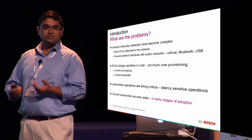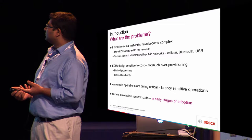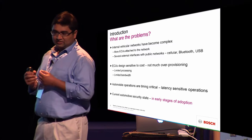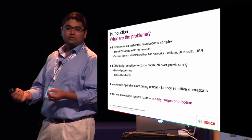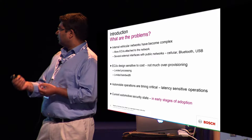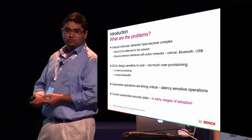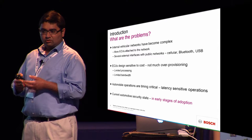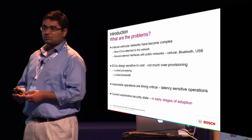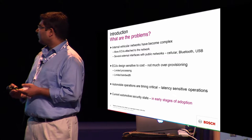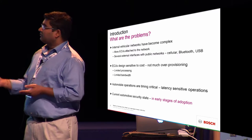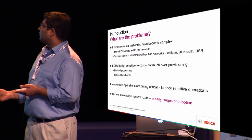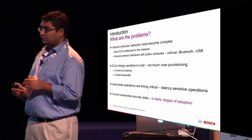While that makes your car easier to use, that's also one of the big problems. You have more ECUs attached to the network, and several of these ECUs are now connected to public networks — there's cellular, there's Bluetooth, there's USB. Because these ECUs are very sensitive to cost, there's not much over-provisioning, and the design of this network was with respect to old cars. It cannot accommodate these new interfaces securely.